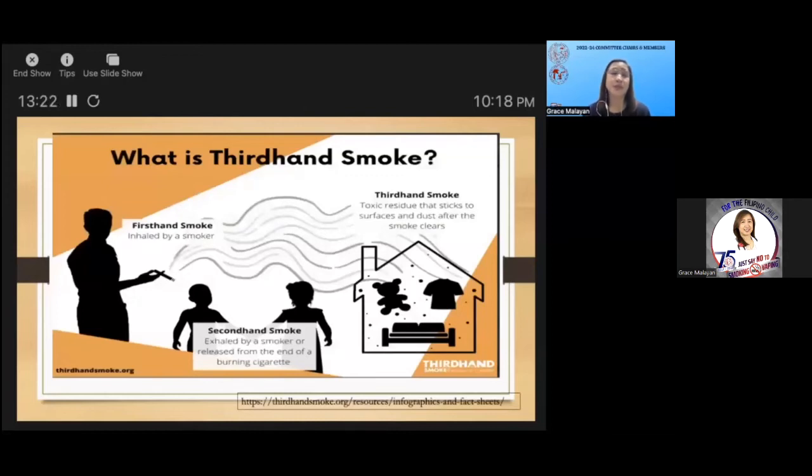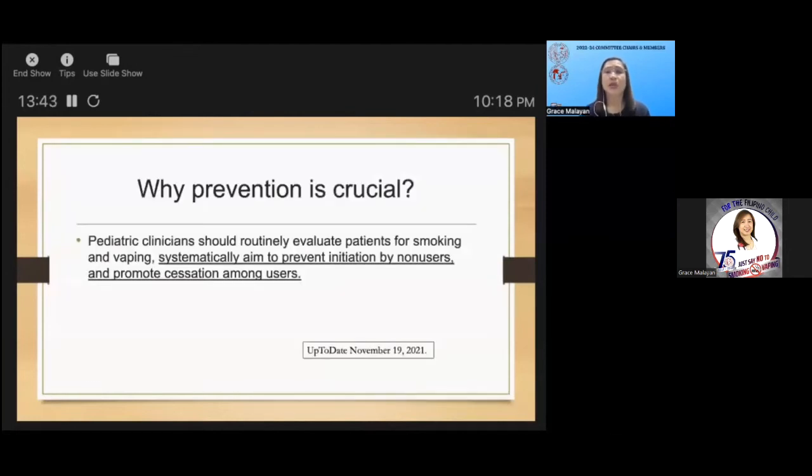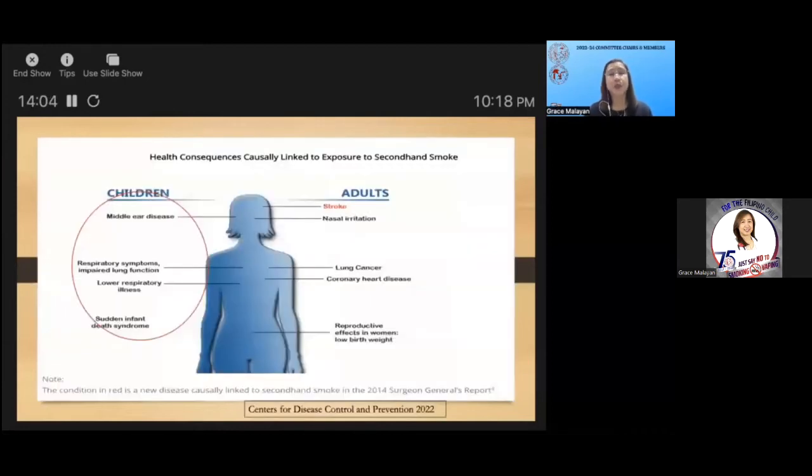This is a very good illustration of the different types of tobacco smoke exposure: first-hand smoke inhaled by the smoker himself, second-hand smoke exhaled by the smoker or released from the end of a burning cigarette, and third-hand smoke, toxic residue that sticks to surfaces and dusts after the smoke clears. Why prevention is crucial? It is vital that pediatric healthcare clinicians routinely address tobacco and nicotine use among patients and their families. We should have a systematic strategy to prevent initiation by non-users and to promote cessation among users.